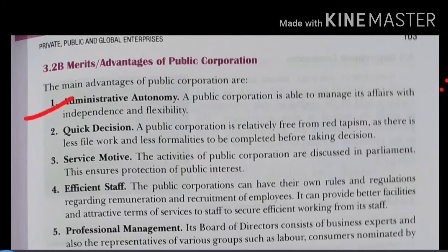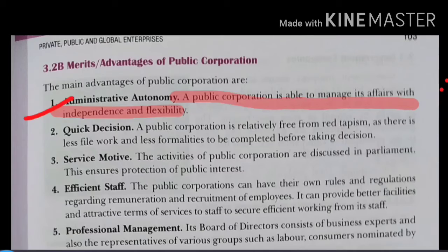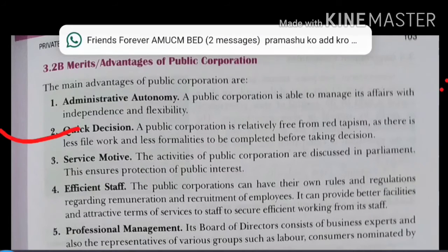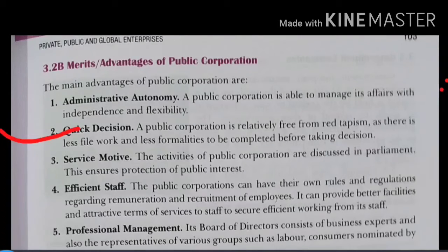Now we are going to discuss the merits of public corporations. First merit: administrative autonomy — a public corporation is able to manage its affairs with independence and flexibility. Its operations and decision-making are free; there is not too much government force on them, so they have administrative autonomy. Second merit: quick decision — a public corporation is relatively free from red tapism; there is less paperwork and fewer formalities before taking a decision, unlike departmental undertakings where there was much bureaucracy, a superior-subordinate chain, and many permissions required. In public corporations, red tapism and bureaucracy are minimal, so decisions are quick.